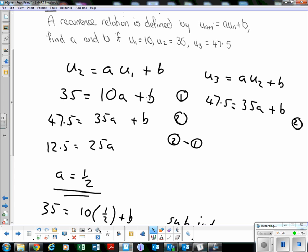They're both positive, so we're going to subtract them. A sensible thing to do here would be equation 2 subtract equation 1, just to keep the values positive. So 47.5 - 35 = 12.5, and 35a - 10a = 25a.